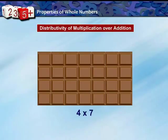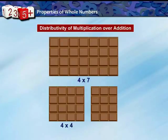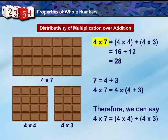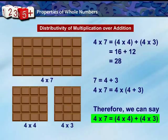Take a chocolate bar of 4 × 7 pieces. Cut it into two pieces: 4 × 4 and 4 × 3. We see that 4 × 7 = (4 × 4) + (4 × 3) = 16 + 12 = 28. Since 7 = 4 + 3, we have 4 × 7 = 4 × (4 + 3) = (4 × 4) + (4 × 3). This is known as the distributive property of multiplication over addition.